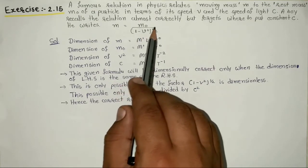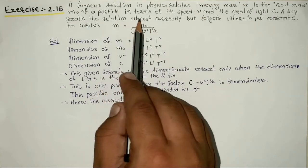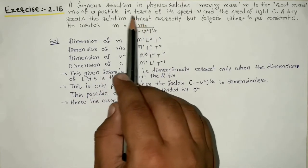That means the denominator becomes dimensionless, so right hand side and left hand side dimensional formulas become the same.